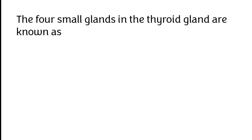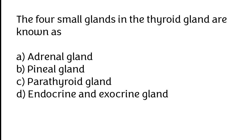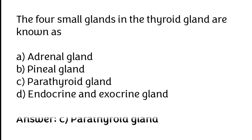The four small glands in the thyroid gland are known as: adrenal gland, pineal gland, parathyroid gland, endocrine and exocrine gland. The correct answer is option C. The four small glands in the thyroid gland are known as parathyroid gland.